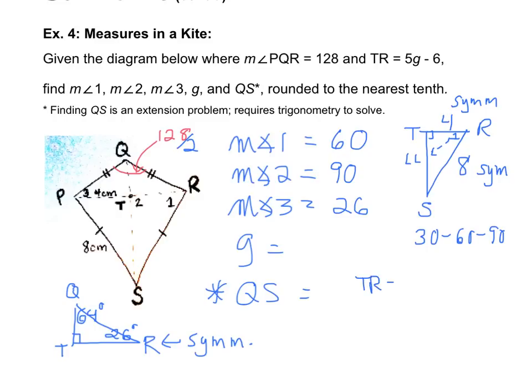Then if we want to find g, we know each half of that left-to-right diagonal is the same, which is 4. So 5g minus 6 equals 4. Subtract, or sorry, add, we get 10. And divide, we get 5, or 2, sorry.